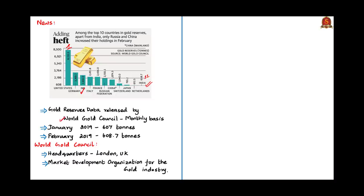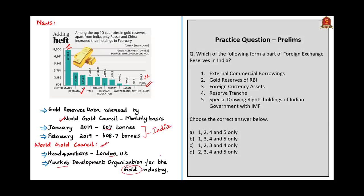The news is that India's gold reserve has increased marginally from February 2019 to 608.7 tons when compared to the previous month January 2019, where it was 607 tons. The World Gold Council is headquartered in London, United Kingdom. It is a market development organization for the gold industry that works across the entire supply chain of gold industry, from mining to market. With this we come to the end of this discussion.